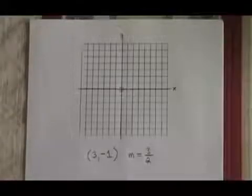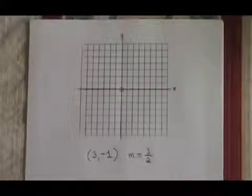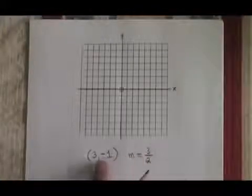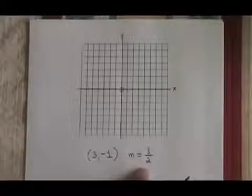The rise over run trick is something that allows us to graph a straight line so long as we have a starting point and the slope in the form of a fraction.